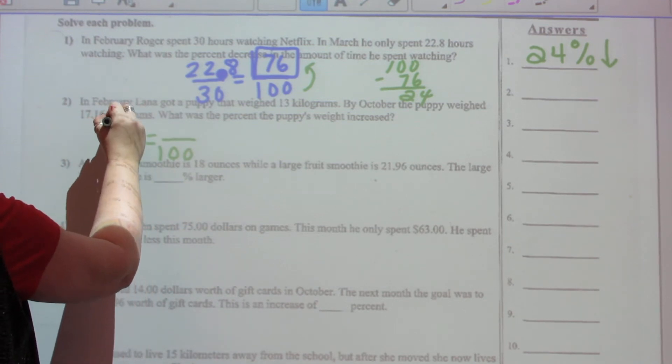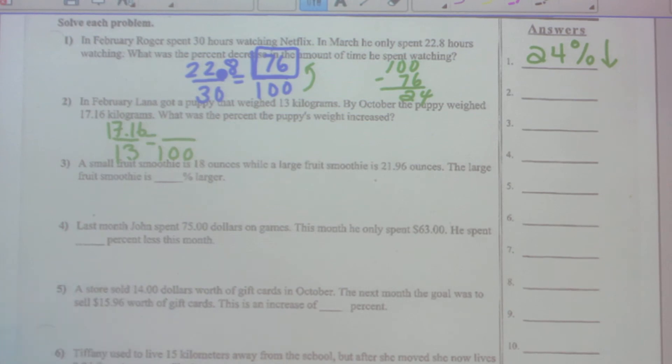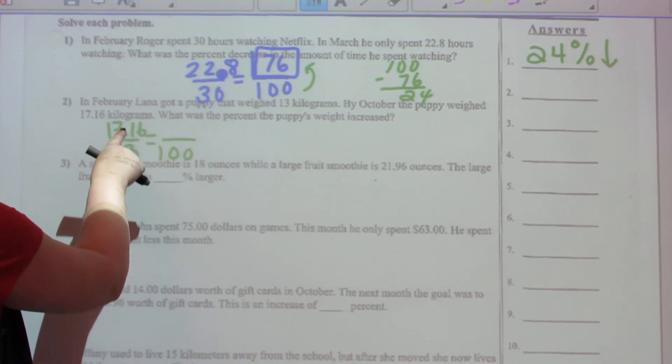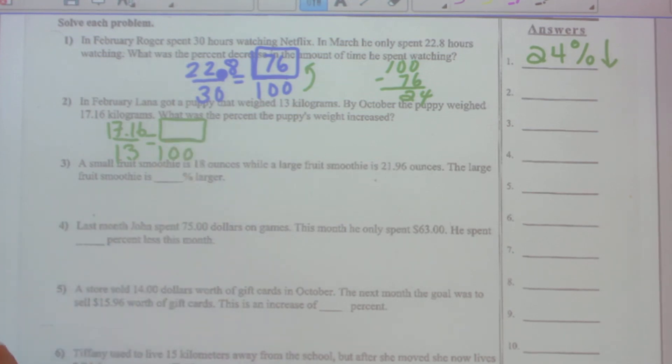And then his weight changes and the new change is 17.16. Okay, and I can see that it's going to go in the up because 13 goes up. So this number here, if I type it in correctly, will be more than 100.